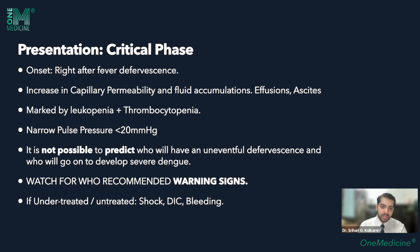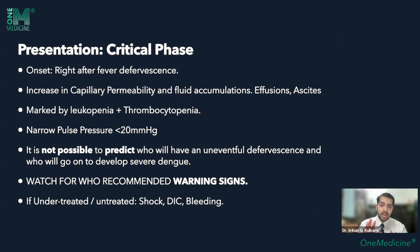There can be marked leukopenia with total counts below 4,000 per microliter, thrombocytopenia, and a narrow pulse pressure. The narrow pulse pressure is not necessarily due to a fall in systolic — it can be a rise in diastolic matching the increased permeability. It is presently not possible by any markers or clinical examination to predict which patient will have an uneventful critical phase or which will develop serious complications.